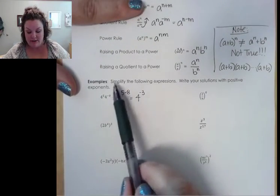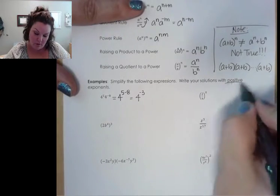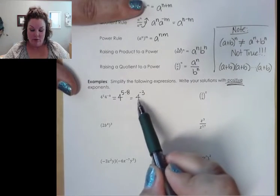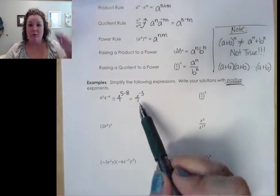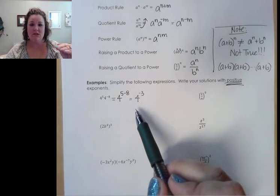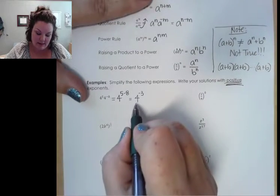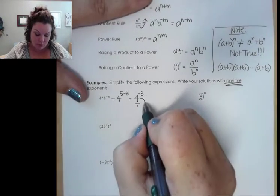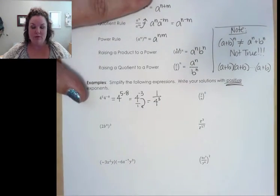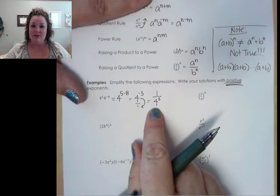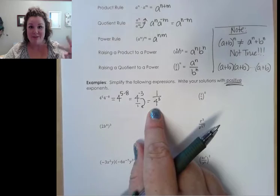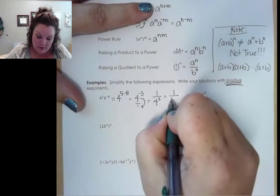Our instruction says to write our solution with positive exponents, so we can't leave our answer as 4 to the negative 3. To get rid of a negative exponent, we move it across the fraction line. This is like 4 to the negative 3 over 1, so we move it down into the denominator and get 1 over 4 cubed. Now we simplify: 4 cubed is 4 times 4 times 4. 4 times 4 is 16, times another 4 is 64. So we get 1 over 64.